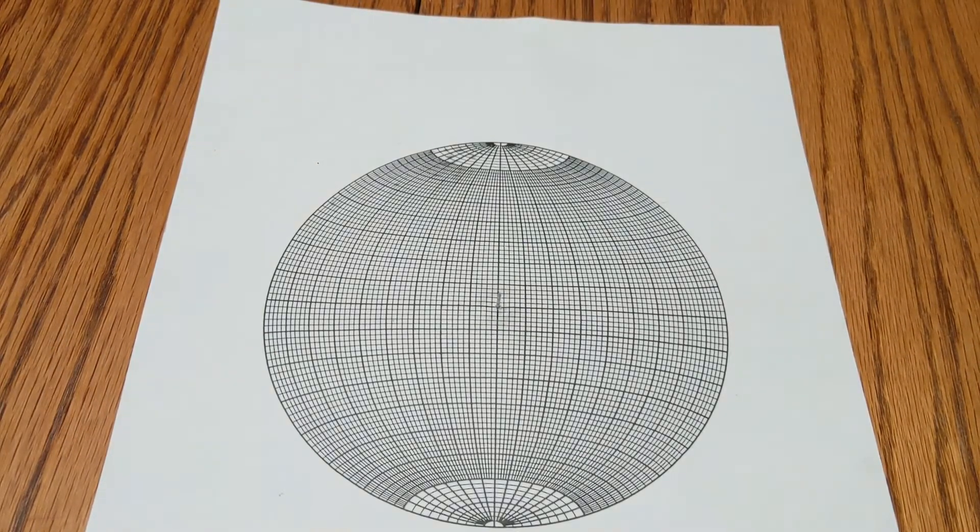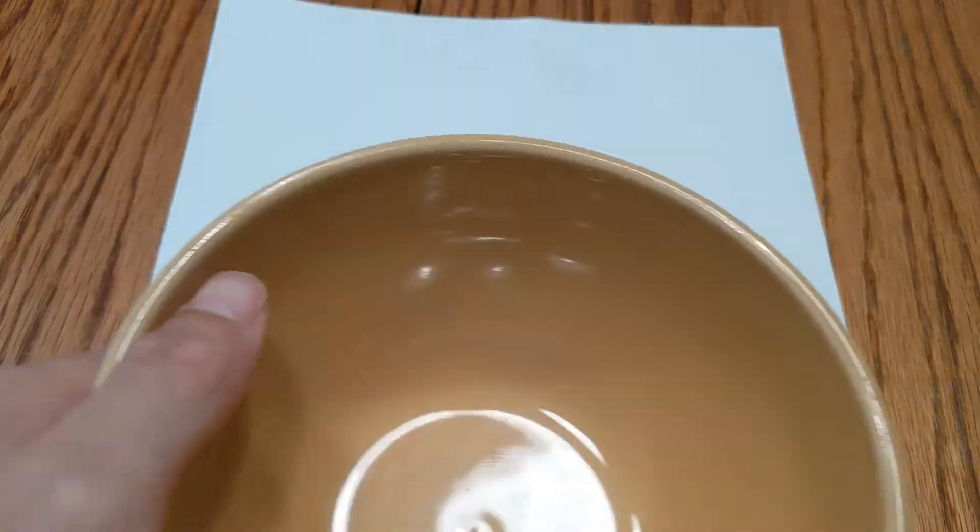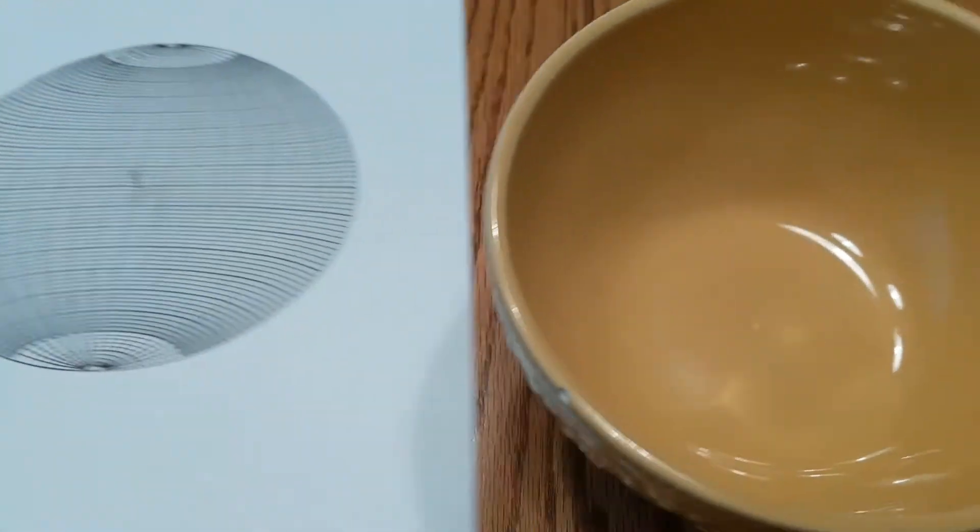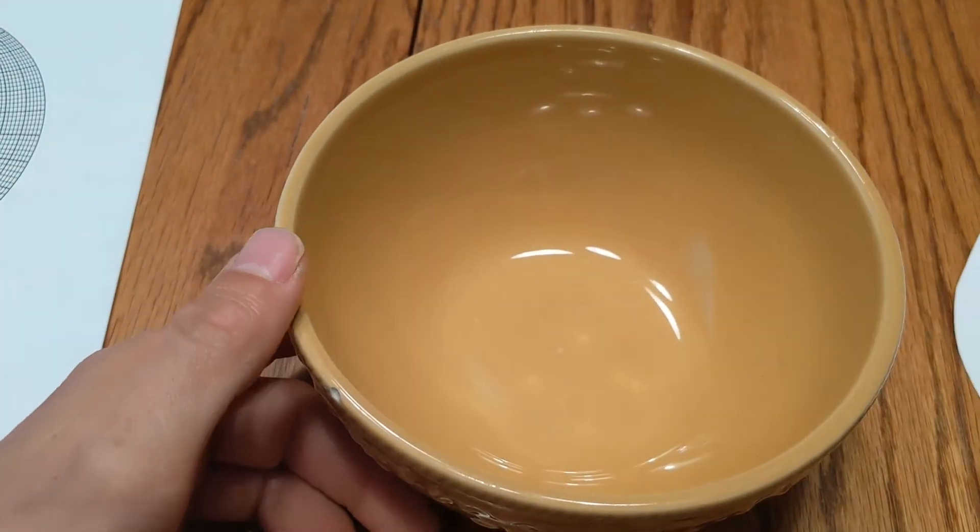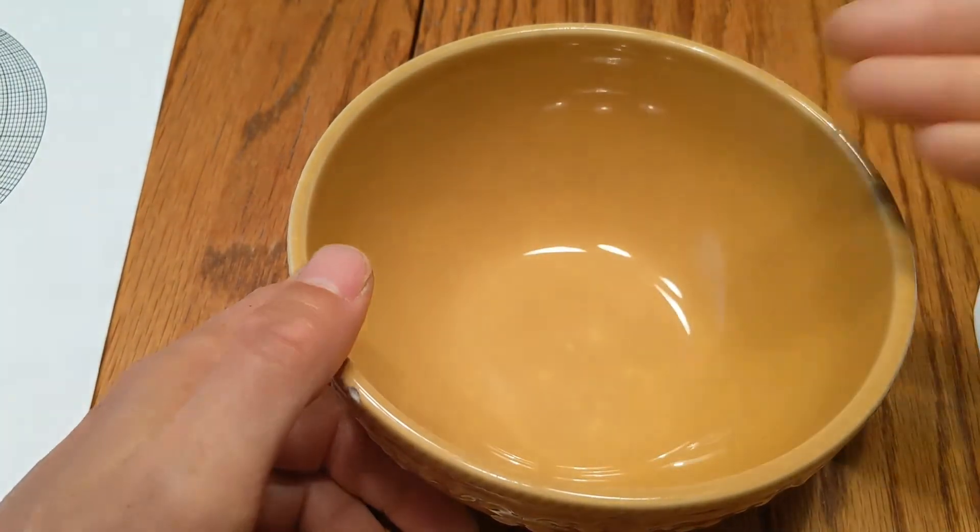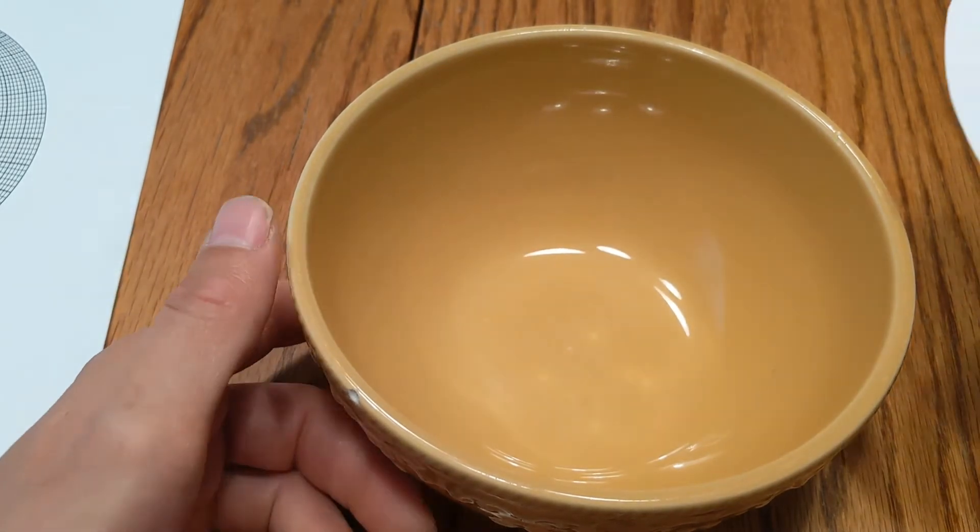So if you remember, we liken the stereo net to looking down into some sort of bowl. Picture a plane coming through and intersecting this bottom of the bowl. That's what we plot when we're plotting planes on stereo nets.